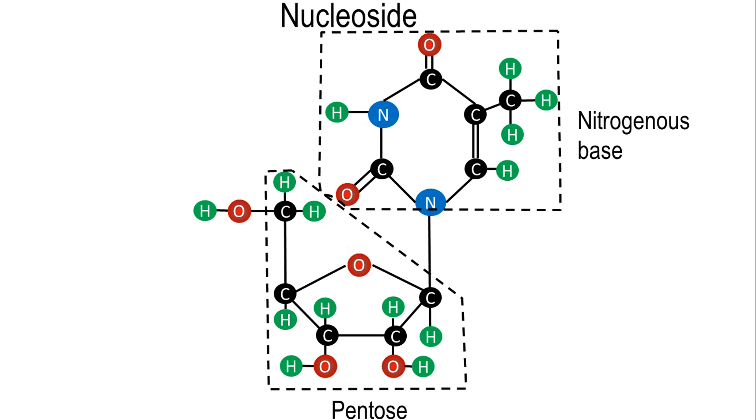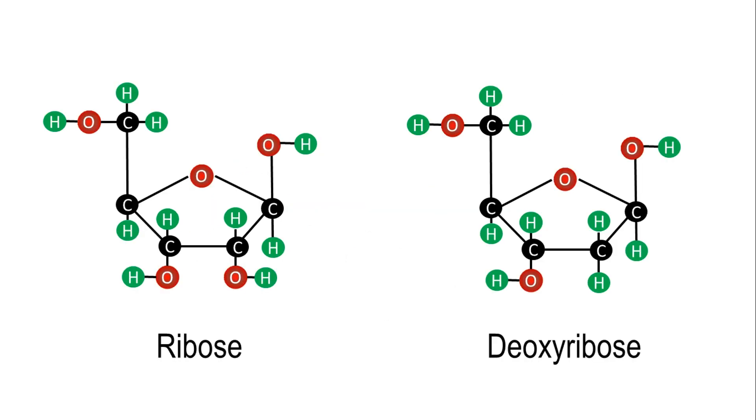Nucleotides have one of two types of pentose: ribose or deoxyribose, which differ only in the group at the second carbon atom. Where ribose has a hydroxyl group, deoxyribose has a hydrogen atom.